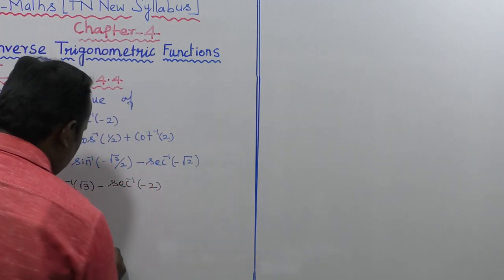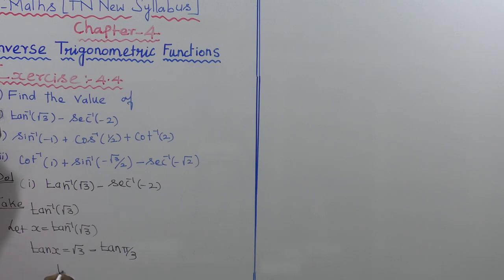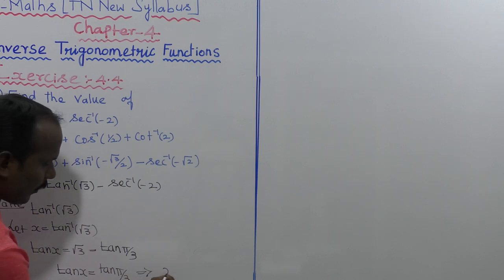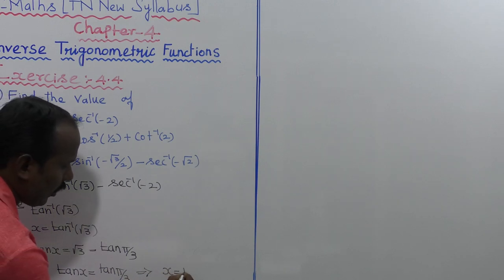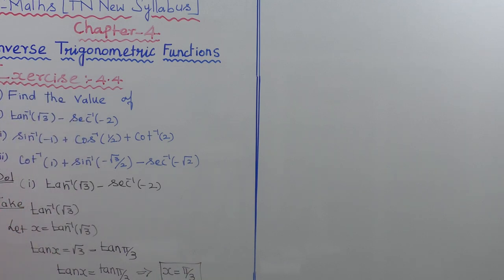So the answer gives us tan x equal to tan pi by 3. The tan and tan cancel, which implies x is equal to pi by 3. This belongs to the principal value range of tan inverse, which is minus pi by 2 to plus pi by 2.